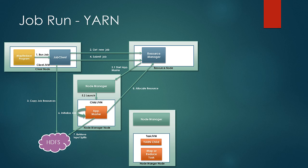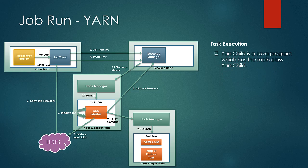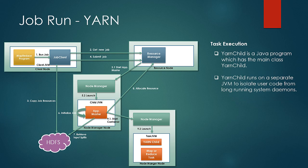Next is the task execution phase. The application master contacts the node manager to launch a container, and then the YARN child is launched. YARN child is a Java program with a main class named YarnChild. YARN child runs on a separate JVM to isolate the long-running system daemons from the user code — this is done in classic MapReduce as well to separate the task tracker from the user code. One difference, however, is that in classic MapReduce, reuse of the task tracker JVM was possible, but in YARN, reuse of the same JVM as YARN child is not supported.